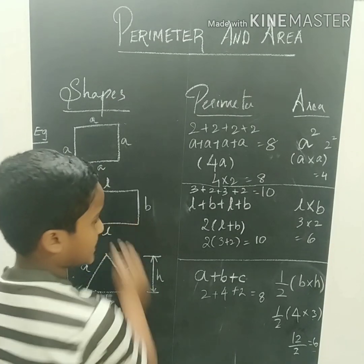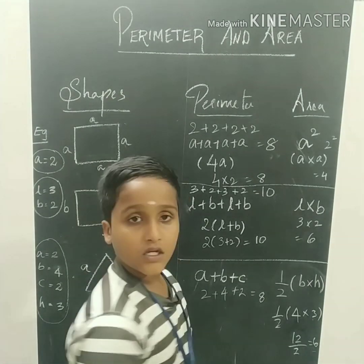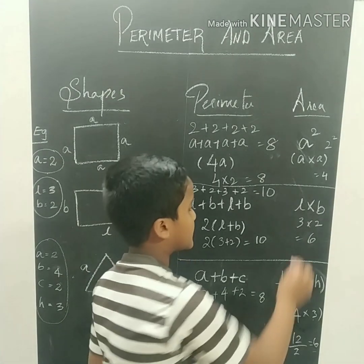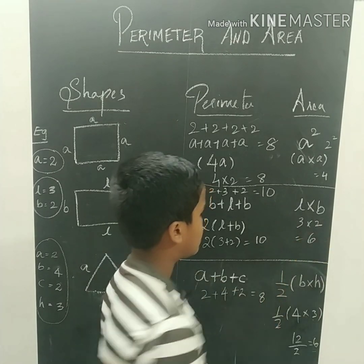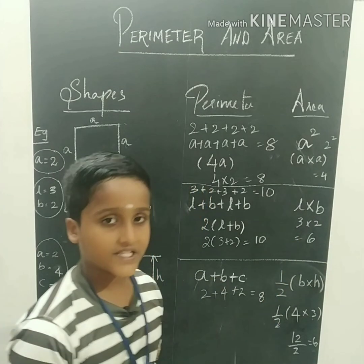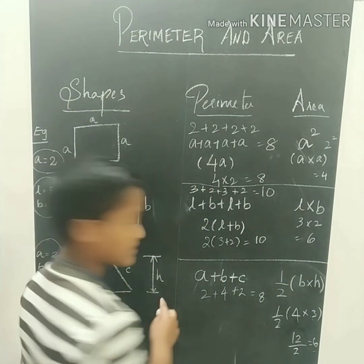Now, look at this rectangle. The area is L into B, which is 3 into 2, equal to 6.